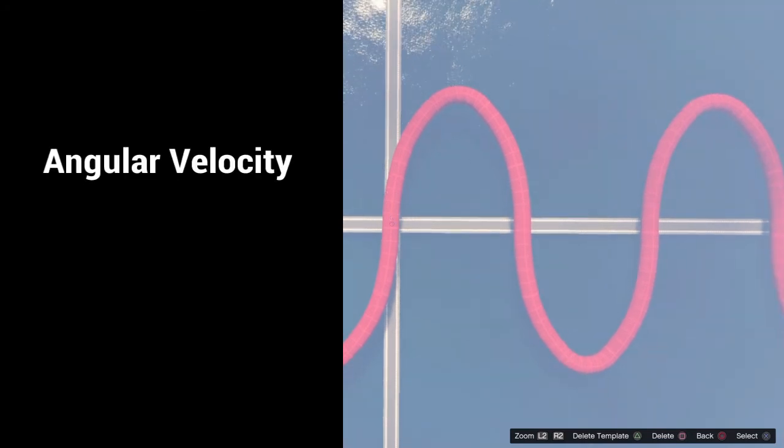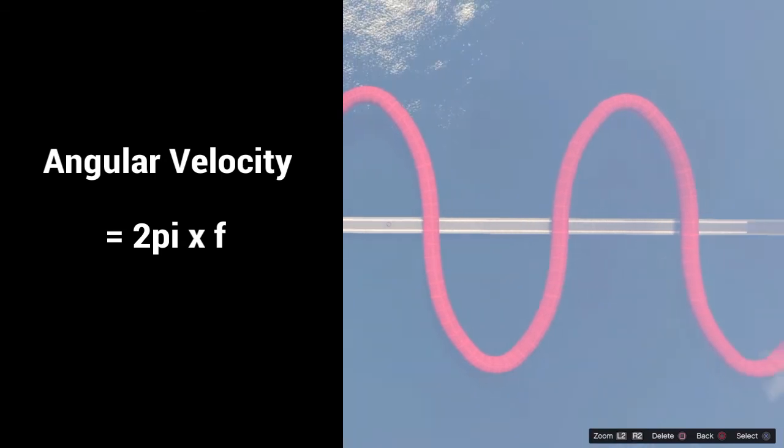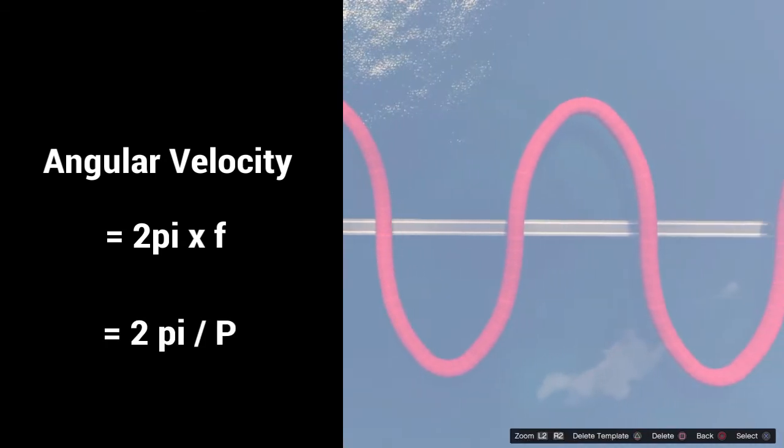Knowing this, we can define the angular velocity as 2π times the frequency, or rearranging, the angular velocity equals 2π over the period.